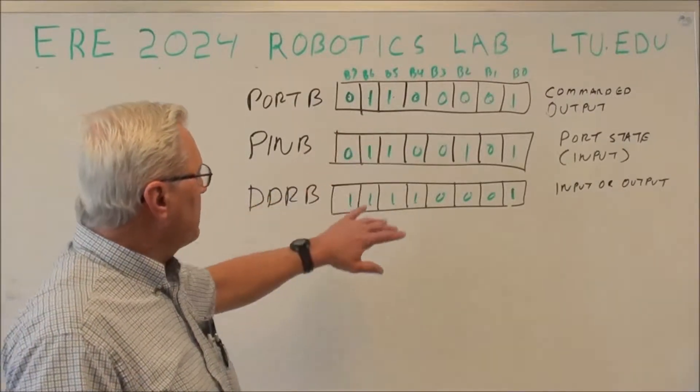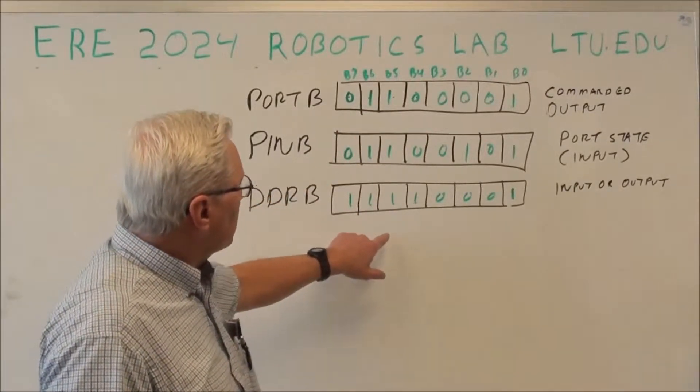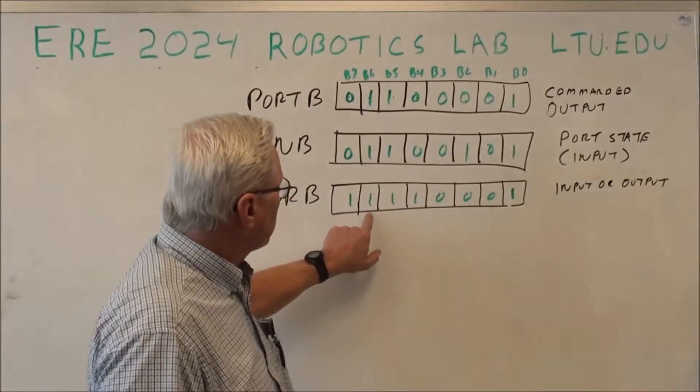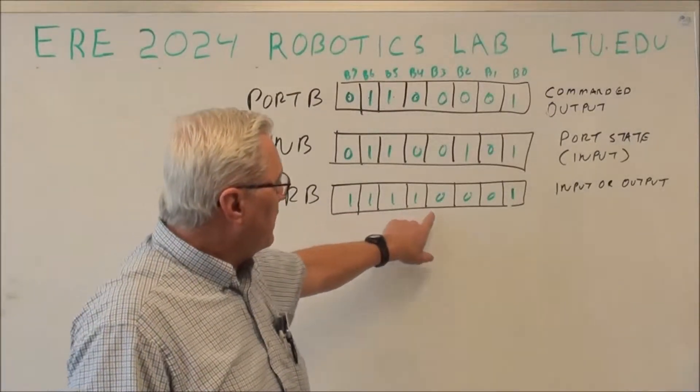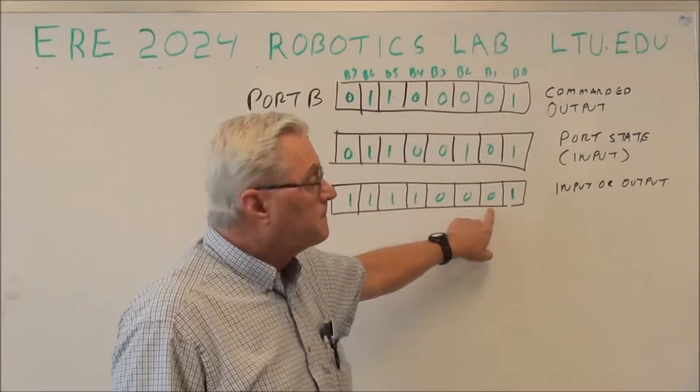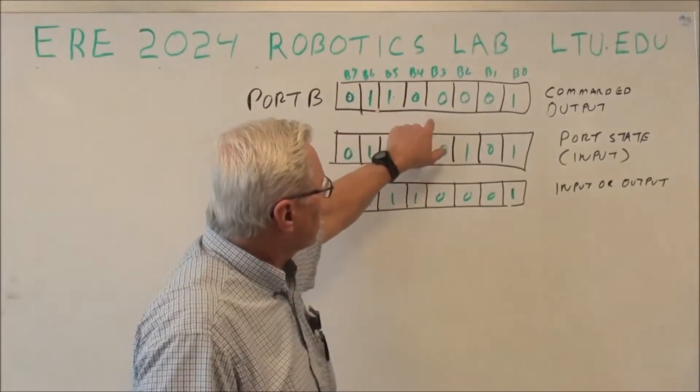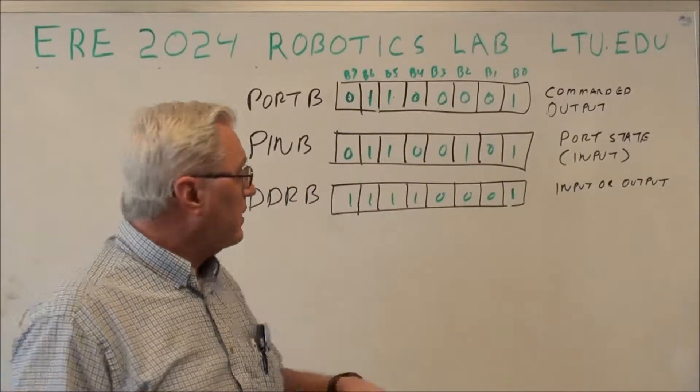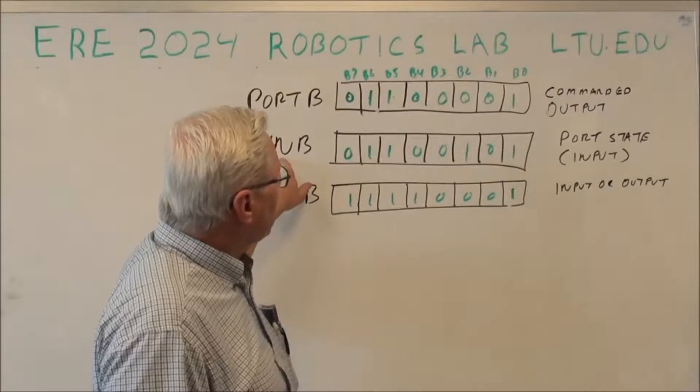With the numbers I've gotten up here now, I've set pin B0, B4, B5, B6, and B7 to be outputs, and these three pins to be inputs. I've commanded some of these outputs on and some of the outputs off. So we can mix all this up. And then here's what I would read on pin B.